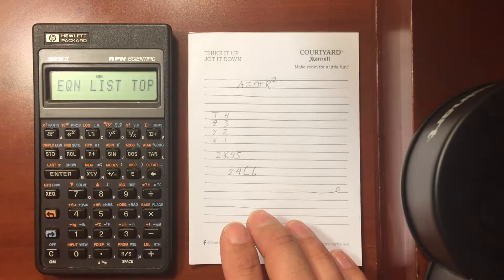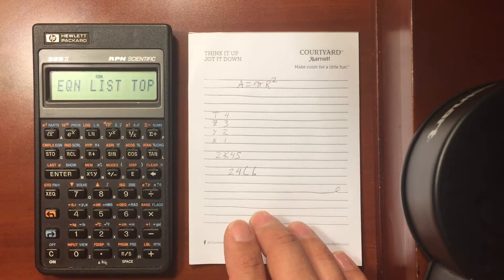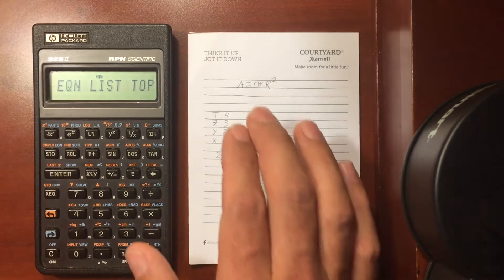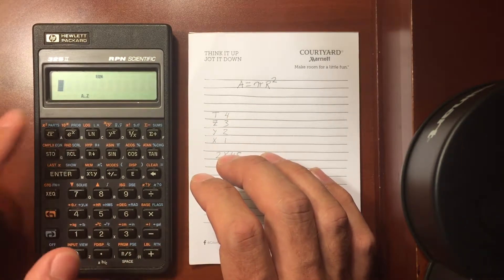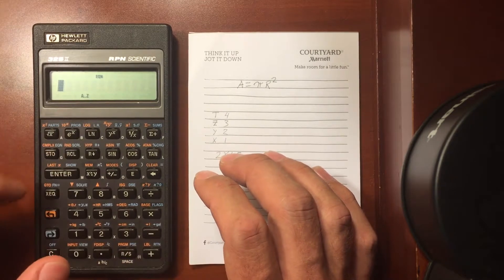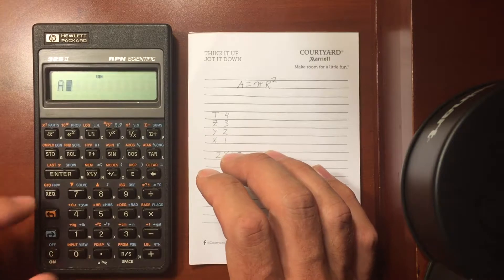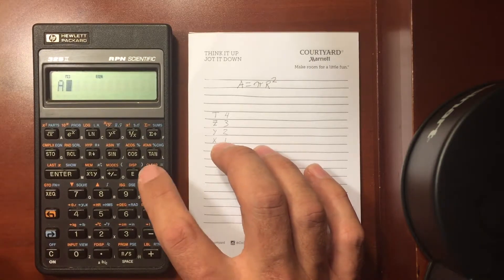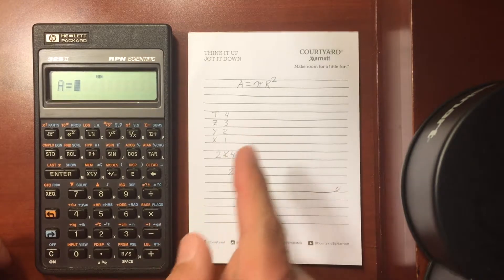So I hit shift and then equation. This brings me to my equation list. And I can just enter the equation as I wrote it here. I'm going to do recall, and that gives me access to the keyboard. You see the A to Z enunciator. So I hit this for A, and then equal is shift, clear button, and then pi.